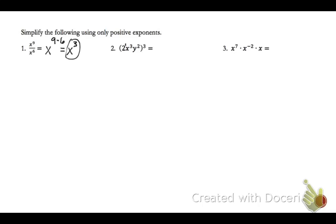So technically this is 2 to the 1st power. So 1 times 3, I'm multiplying the powers, is 3. And then it'll be times x to the 3 times 3, which is 9. And then finally, y to the 2 times 3, which is 6. So 2 cubed is 8, x to the 9th, y to the 6th.